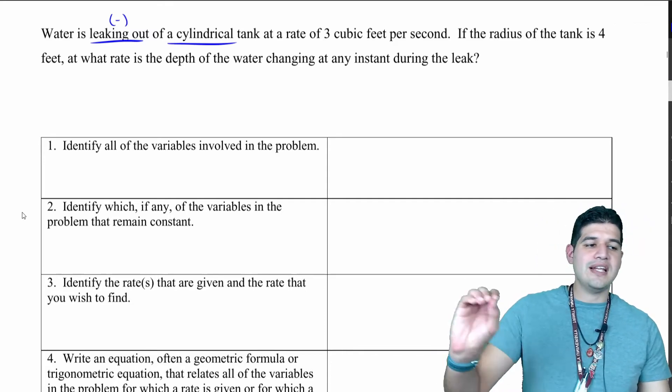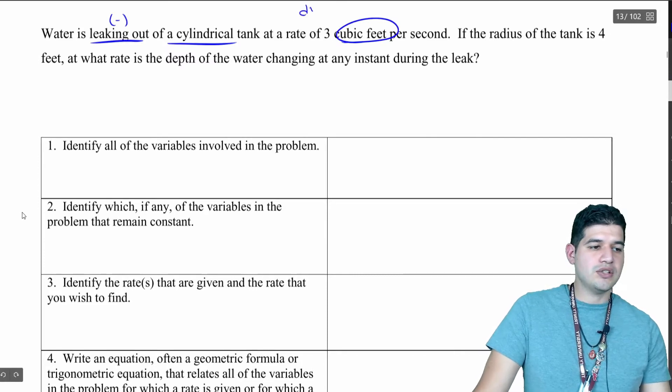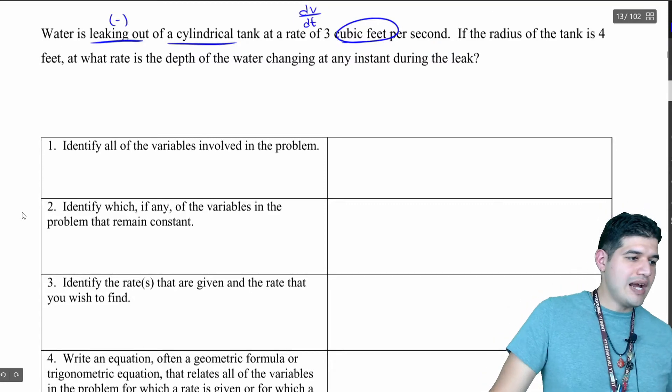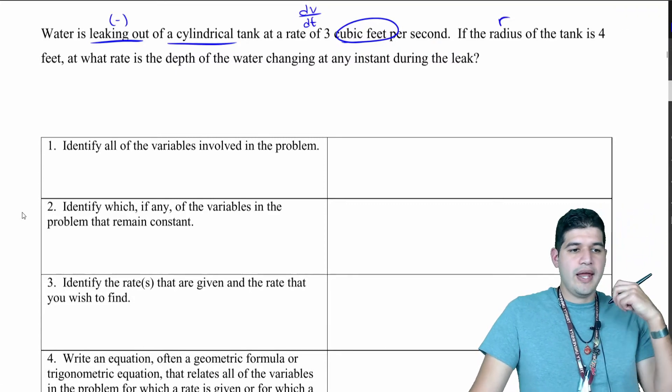Now we know the rate that the water is coming out, and it says cubic feet per second, so that's volume, dV/dt.